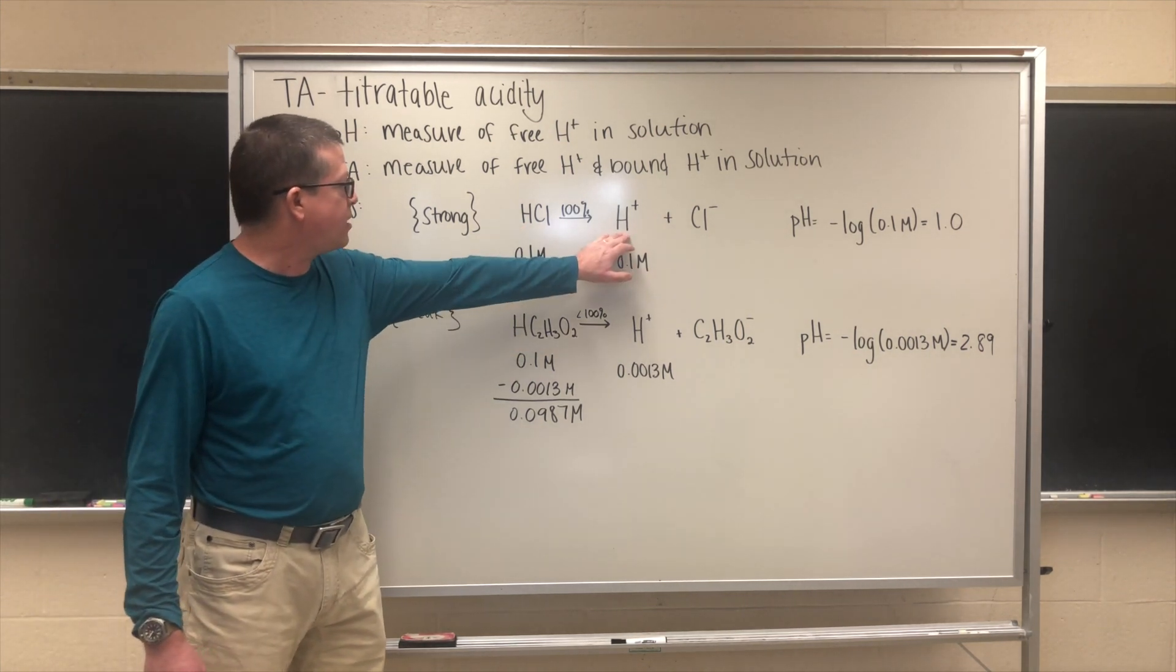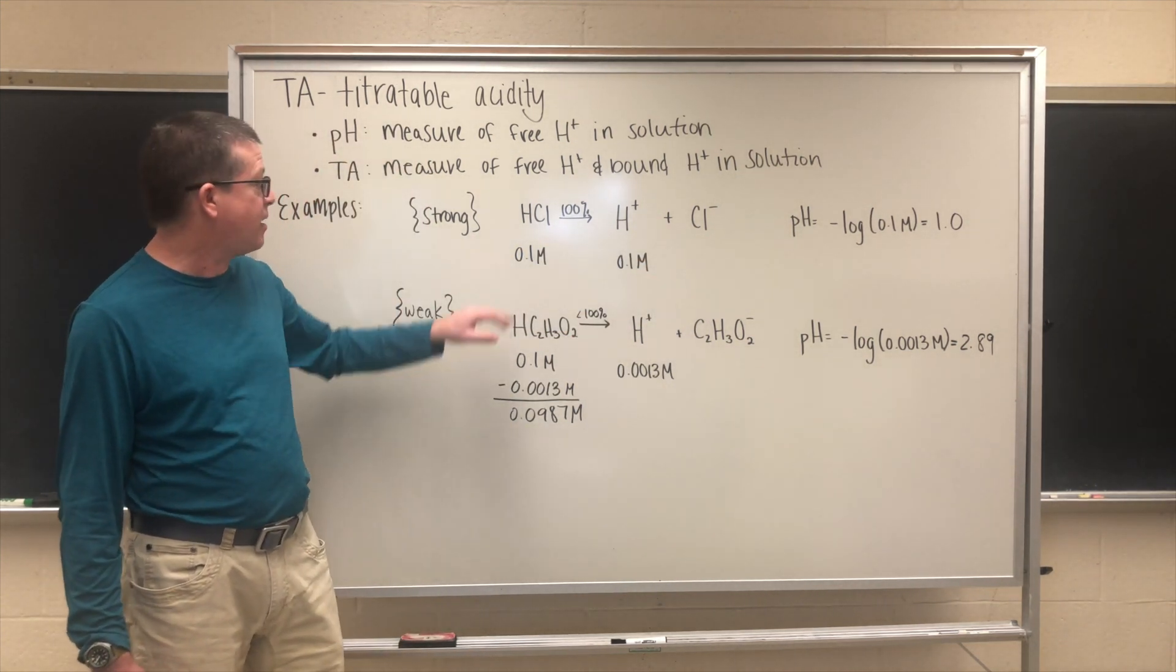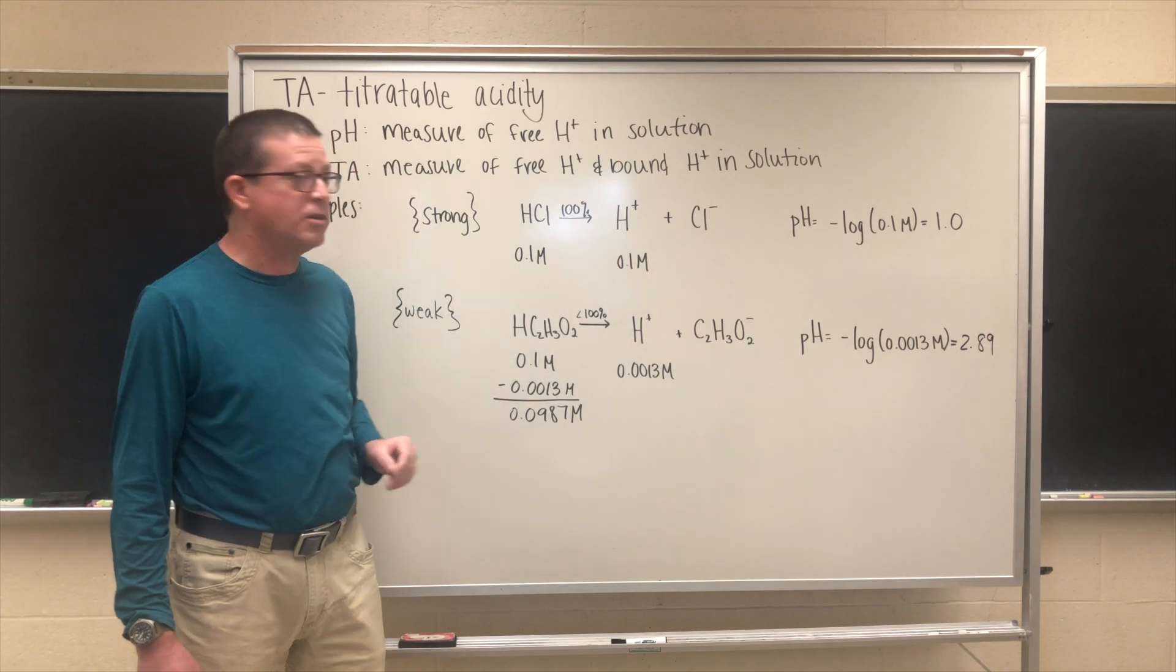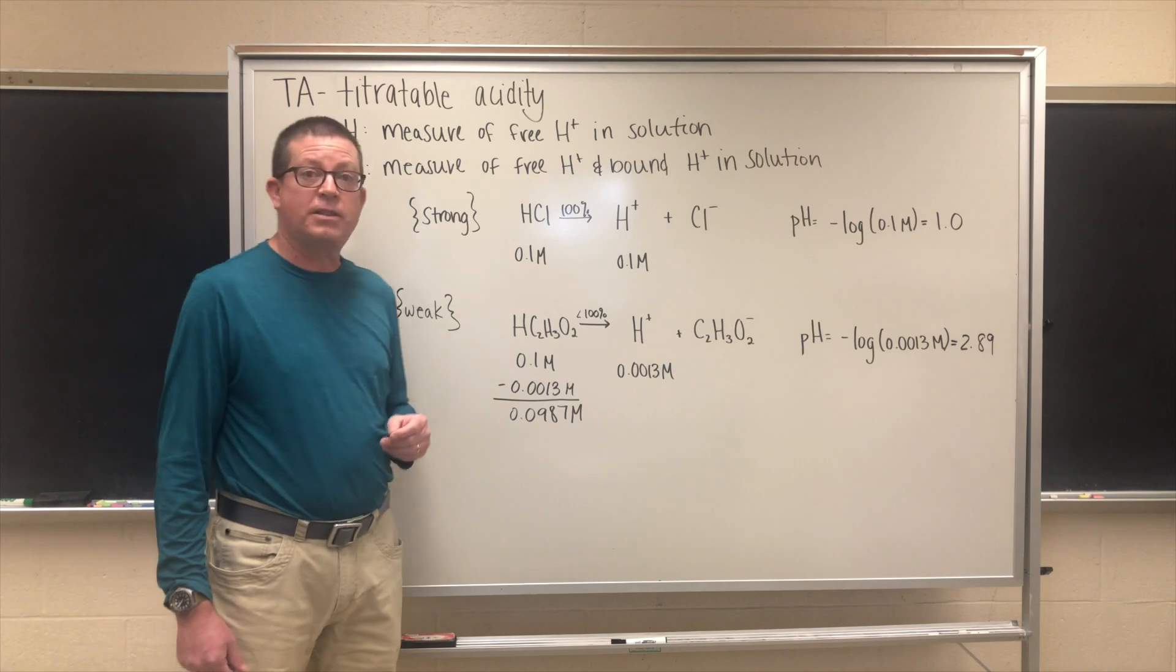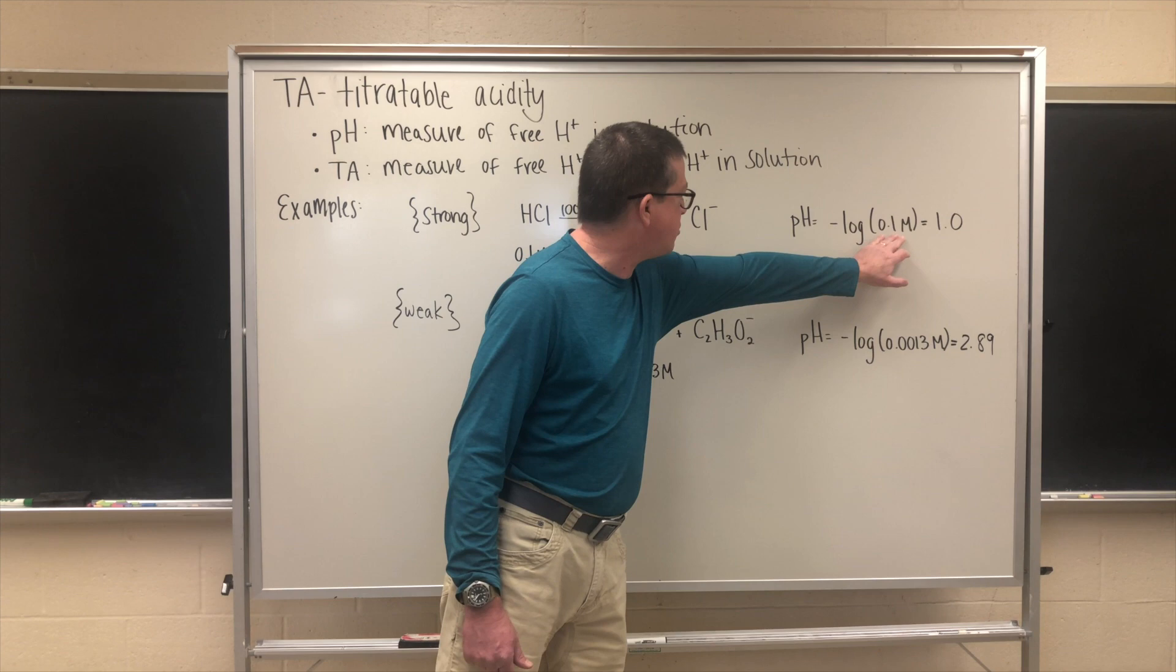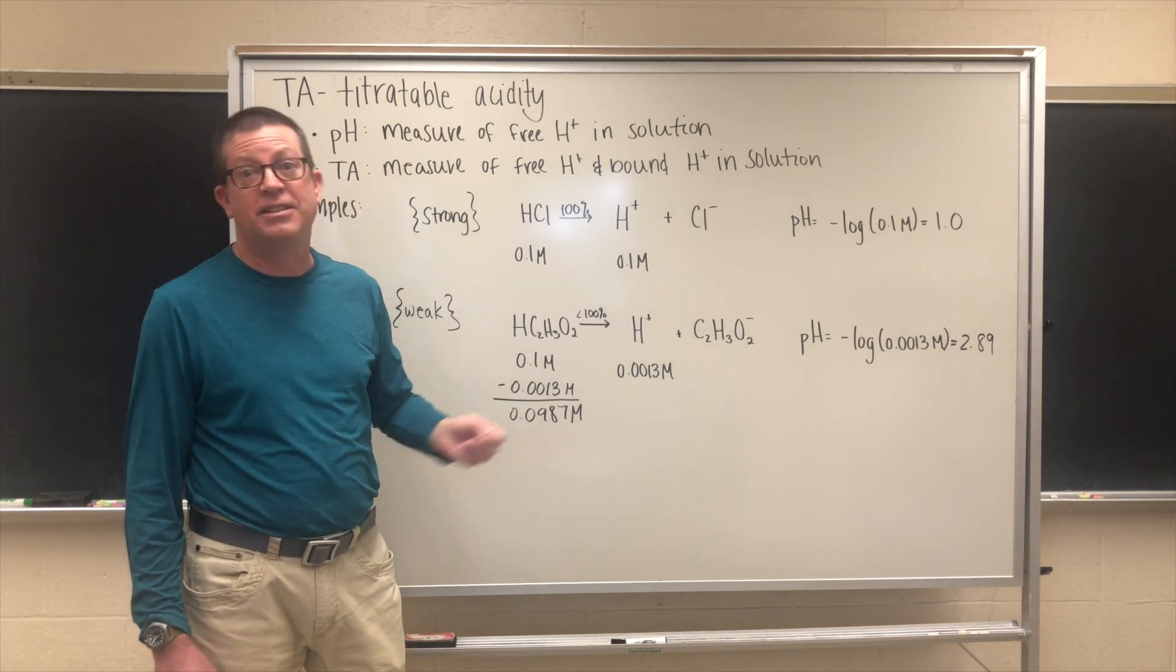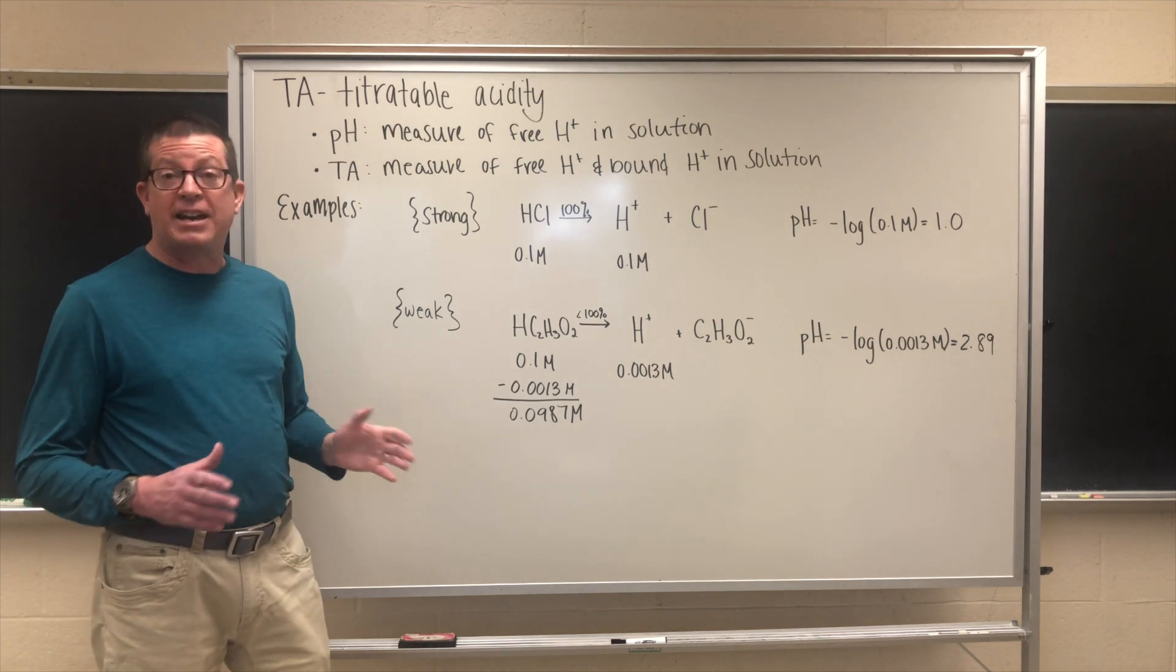Another way of stating that is if I have a 0.1 molar solution of hydrochloric acid in solution, I'm going to make a 0.1 molar concentration of hydrogen ion. We can calculate the pH of a solution by taking the negative base 10 logarithm of the hydrogen ion concentration. When we do this, this gives us a pH of 1.0, which is quite acidic.